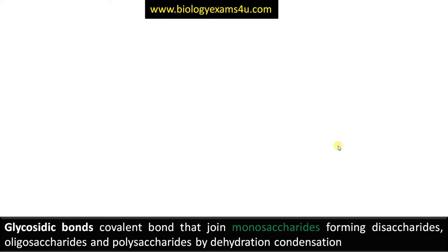Glycosidic bonds are covalent bonds that connect monosaccharides, forming disaccharides, polysaccharides, etc., by dehydration condensation reaction or by the removal of a water molecule.